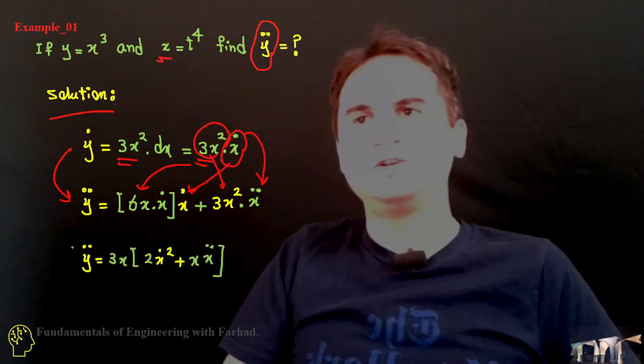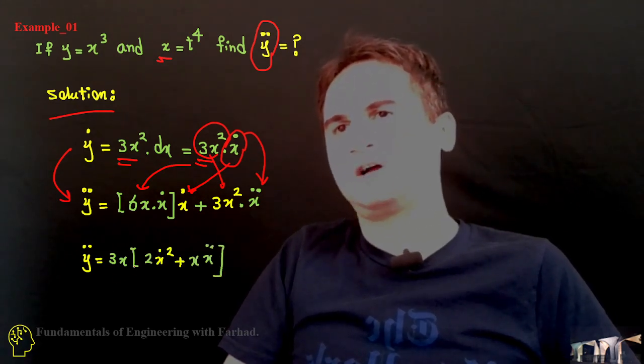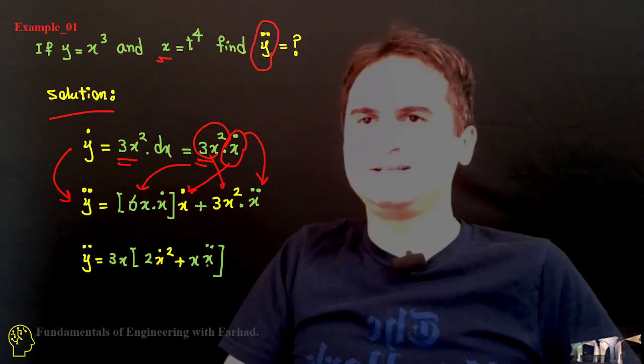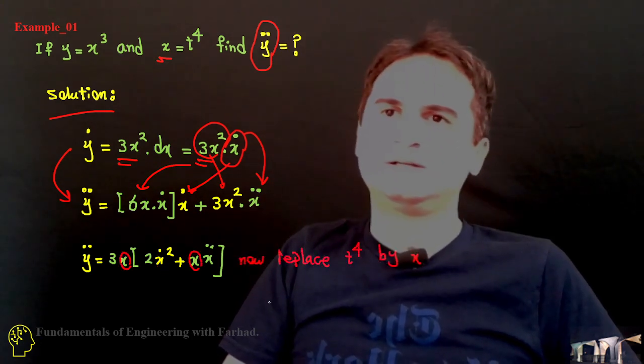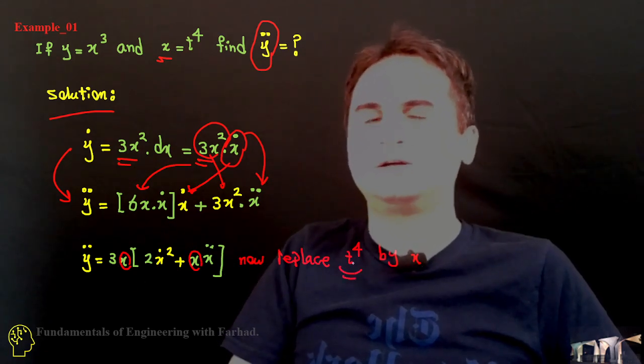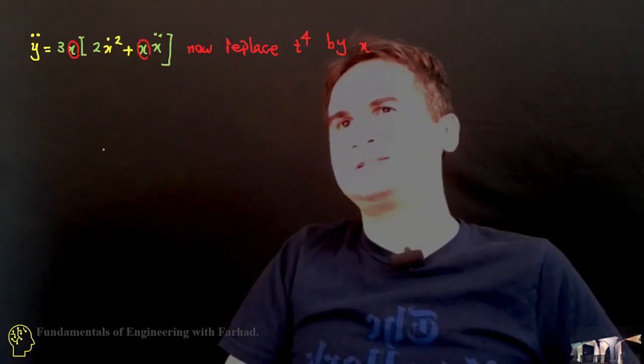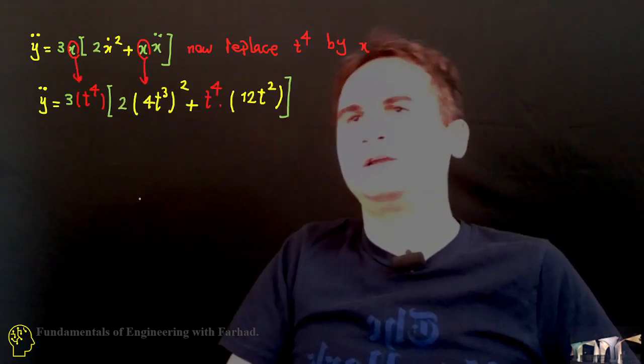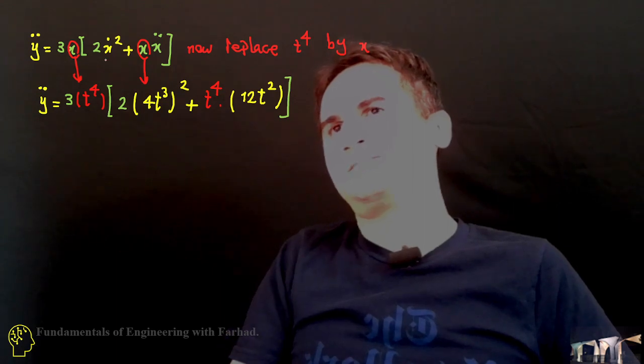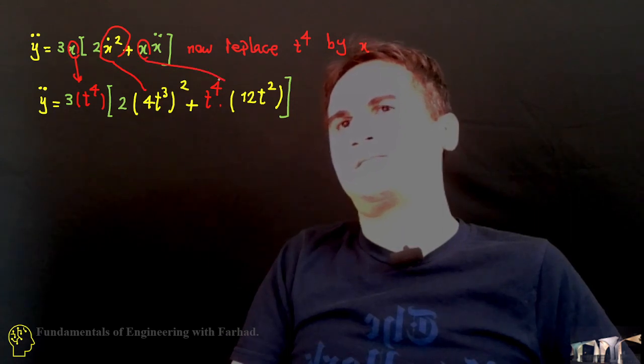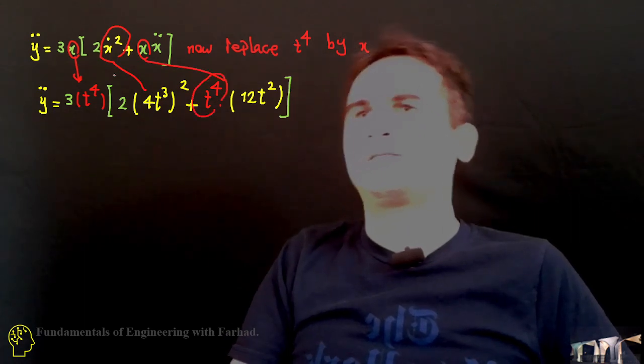Then we can rearrange the equation like 3x times bracket 2 x dot squared plus x times x double dot. And then if you just replace x by t to the fourth, you can easily have like, wherever you have x, just replace them by t.